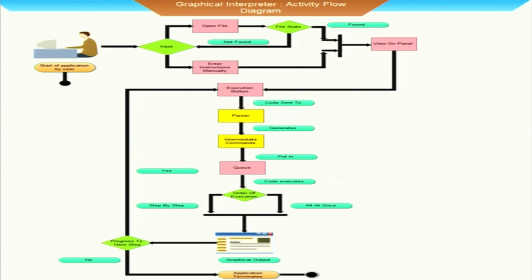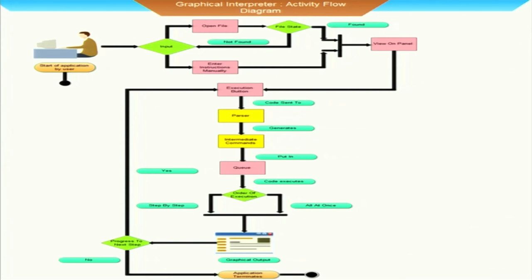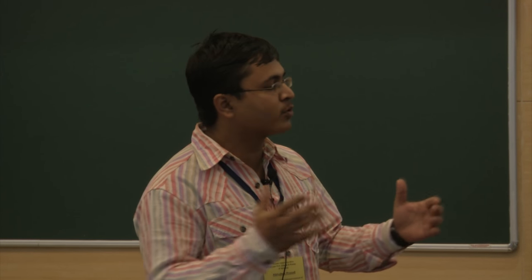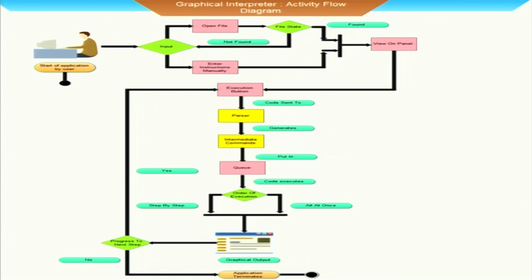This is the activity flow diagram of this project. Here the user, when they switch on the application, has two options: whether to take the input from a file or to type instructions manually. When the user takes the file and the file gets opened, all the data gets shown in the view panel. After that, that data is passed to the parser. When the user presses the execute button, the data is passed to the parser and then it starts getting executed and generates intermediate code. When the intermediate code gets generated, it is then passed in a queue.